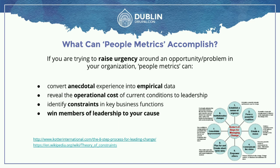That little diagram on the right is from John Kotter. He wrote something called The Eight Step Process for Leading Change — he wrote a book called Leading Change. Very interesting. And the first step is establishing a sense of urgency. So these metrics are all around establishing a sense of urgency.